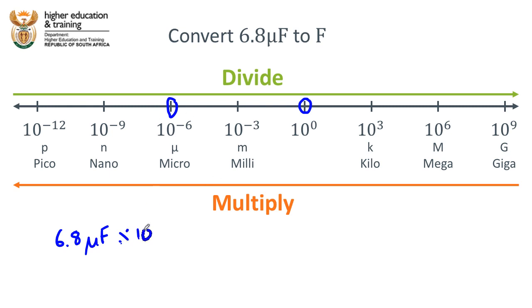10 to the power—well how many jumps do we need to make to get from negative 6 to 0? We need to make 6 jumps, so that is 10 to the power 6.